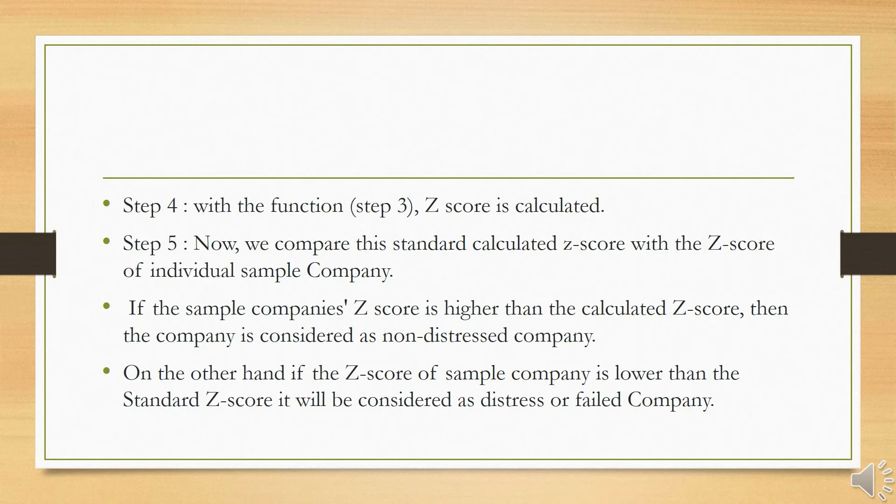If the Z-score is higher than the calculated Z-score, then the company is considered as a non-distressed company. On the other hand, if the Z-score of the sample company is lower than the standard Z-score, it will be considered as a distressed or failed company.